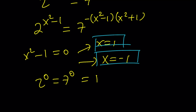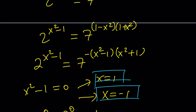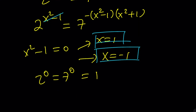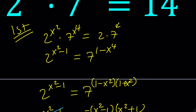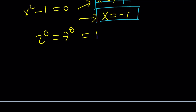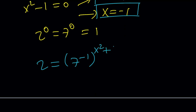Now we look for deeper solutions. We can cancel out the x squared minus 1 factor by raising both sides to the power 1 over (x squared minus 1). The negative stays, so it negates x squared plus 1, giving us 2 equals 7 to the power of negative 1, all raised to (x squared plus 1). Since 7 to the negative 1 is 1 over 7, we write this as 2 equals (1/7) to the power (x squared plus 1).